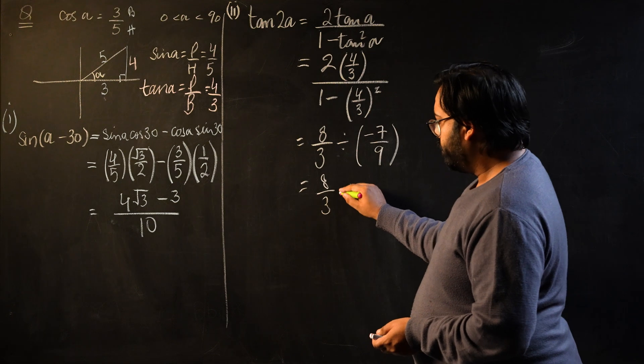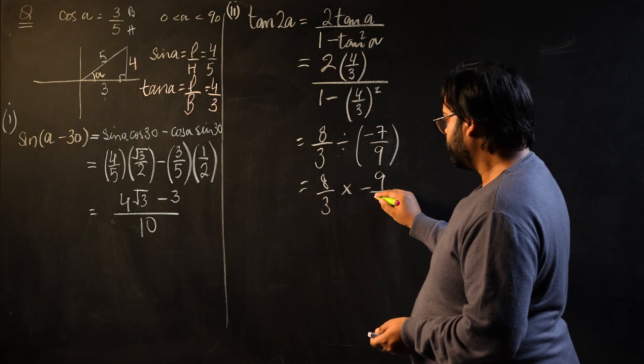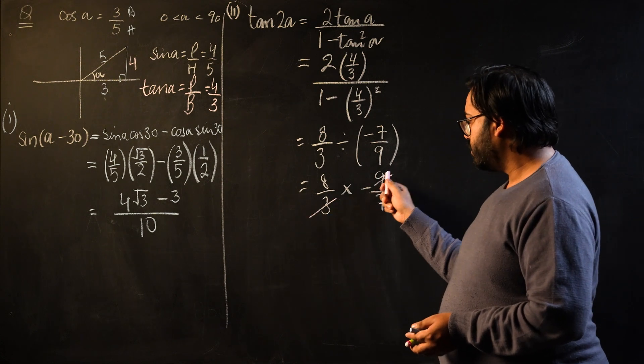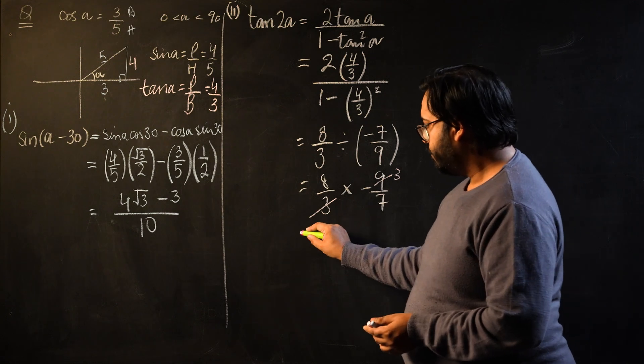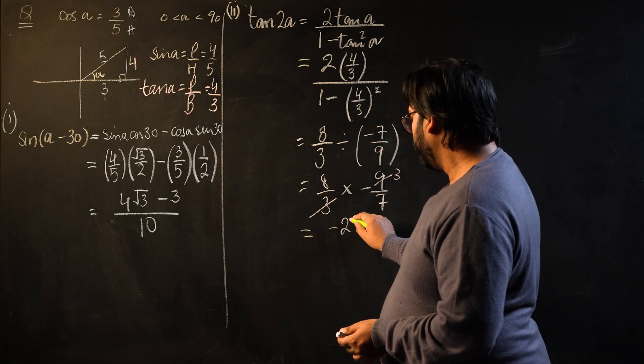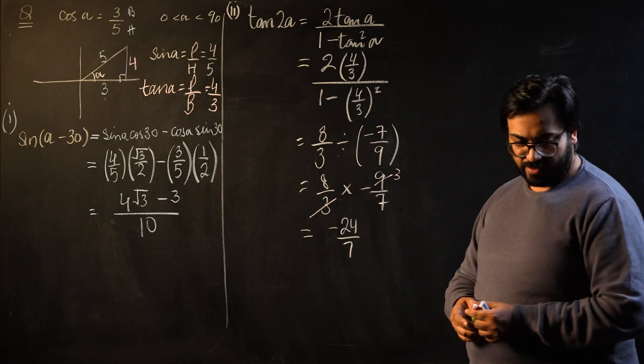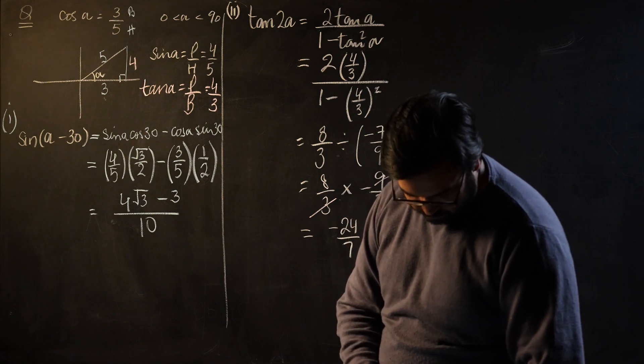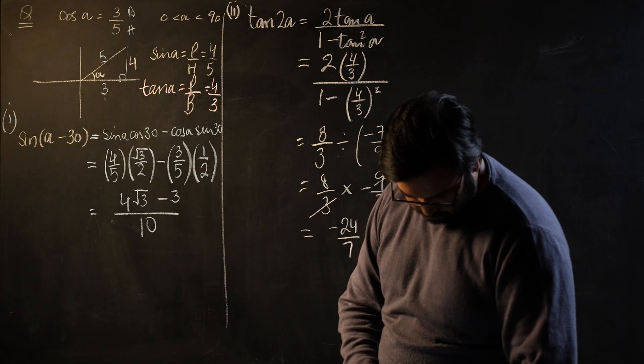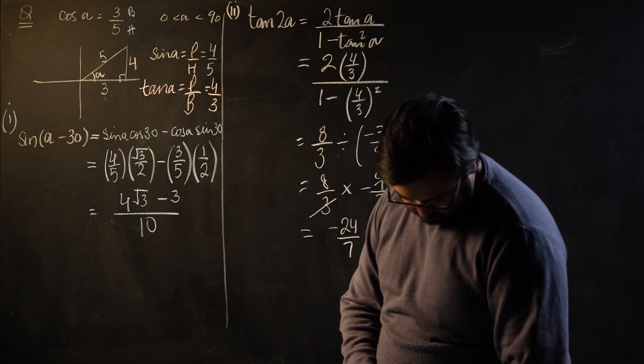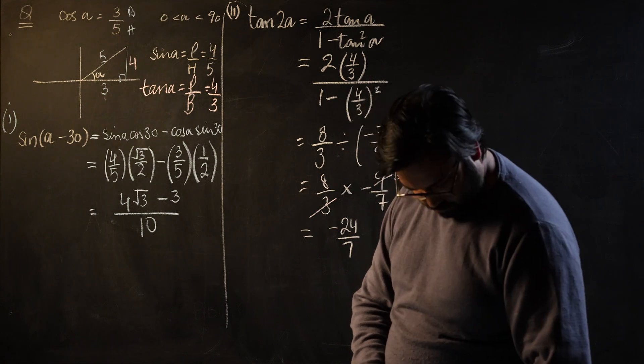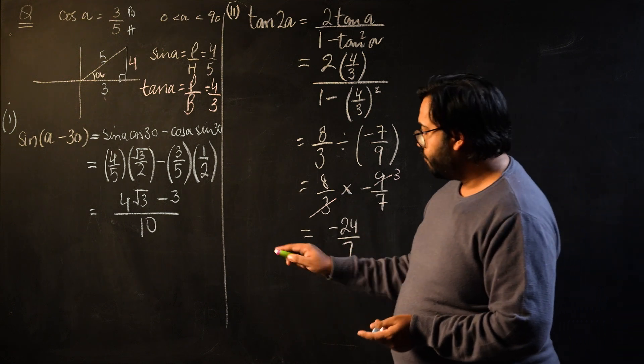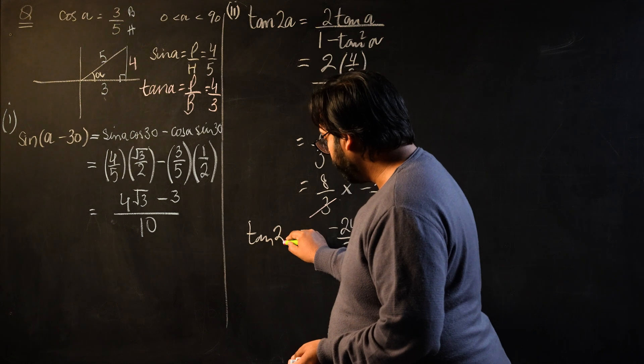You can use your calculator now because we are allowed to use calculators for arithmetic functions, even if it is an exact value question. We will cancel the 3 with this 3, and we are left with -24/7. This value is -24/7 for tan(2α).